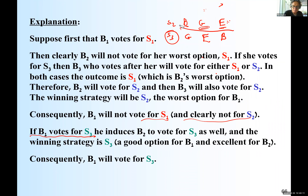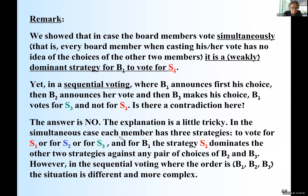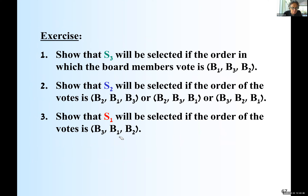In your problem set you have several solutions with the sequential order. The exercise asks you to show that S3 will be selected if the order is B1, B3, B2 — all under the assumption that B1 has the power. And S2 will be selected if the orders are B2, B1, B3, or B2, B3, B1, or B3, B2, B1. Show that S1 will be selected if the order is B3, then B1, then B2. Let's do this exercise.